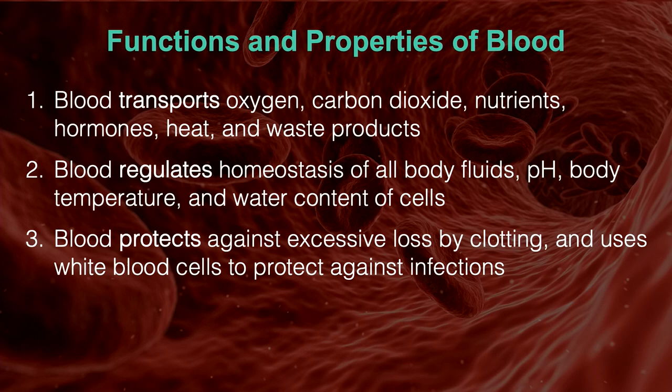Blood also has a protective role against invading pathogens — the immune system is largely evident in the blood. And there's clotting: if the vasculature is open to the environment, we have a way of protecting ourselves from losing fluid, proteins, ions, and too much blood. Protection, regulation, and transport — three major functions of the blood.